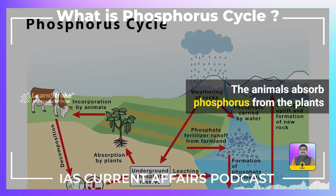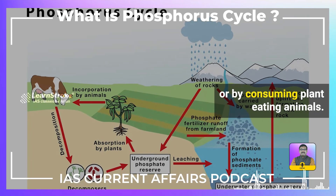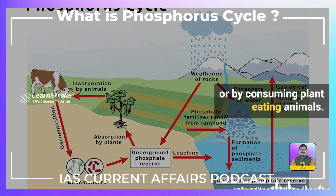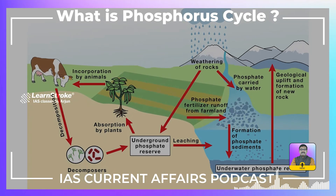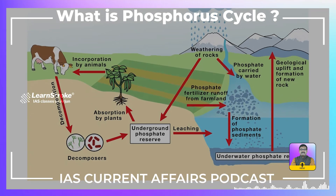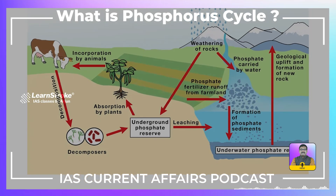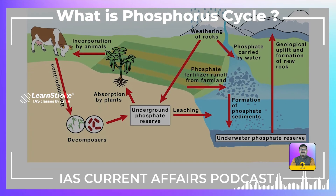Animals absorb Phosphorus from plants or by consuming plant-eating animals. The rate of the Phosphorus Cycle is faster in plants and animals when compared to rocks.